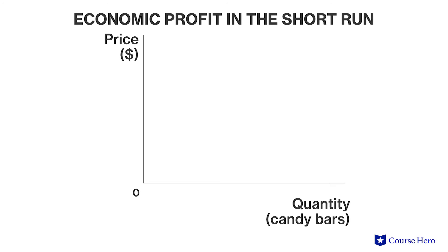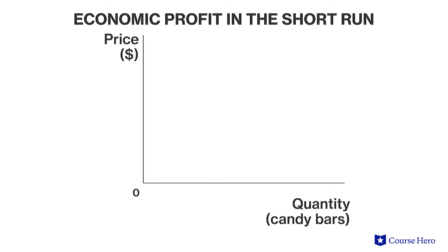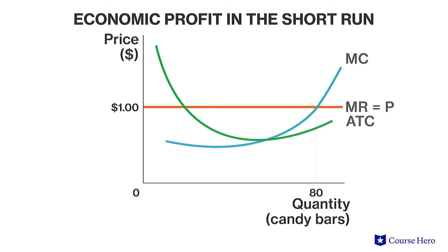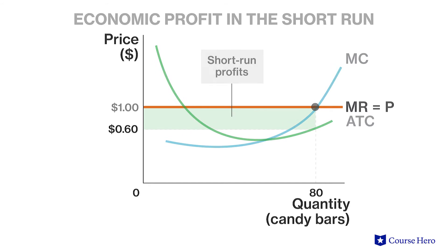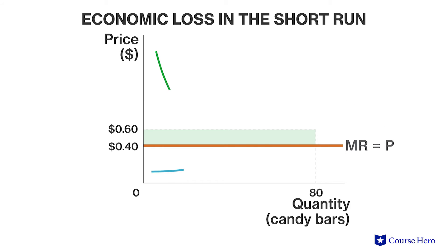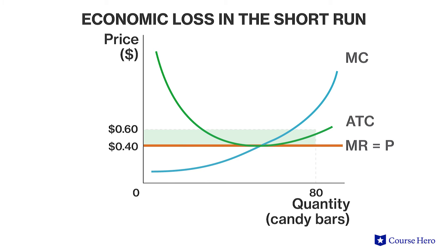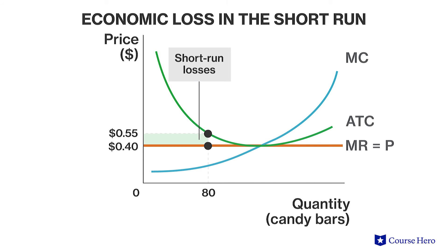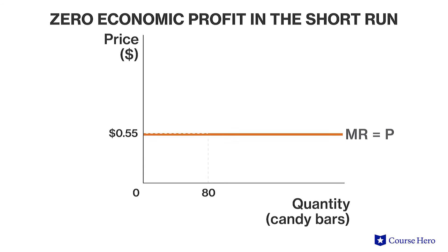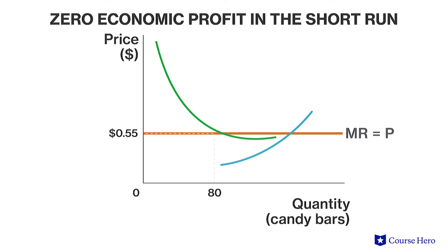For example, suppose a candy bar company is producing candy bars for which the market price is $1. If the average cost of producing 80 candy bars is $0.60, the firm finishes with a profit because price is greater than the average total cost at the profit maximizing point. Suppose instead the market price drops to $0.40 per candy bar, but the average cost of producing and selling a candy bar is $0.55 at the optimal quantity — the firm is operating at a loss. If prices are equal to the minimum average total cost, then the firm will break even and earn no economic profit.